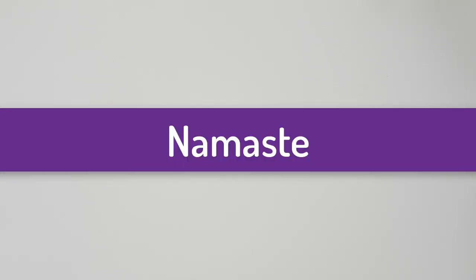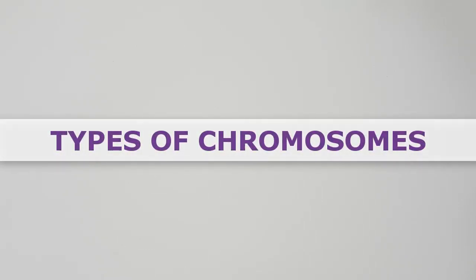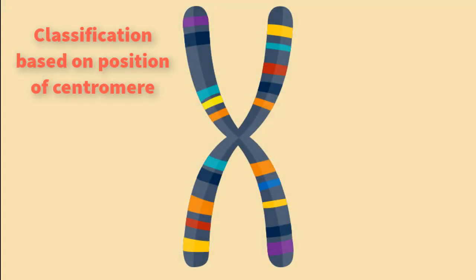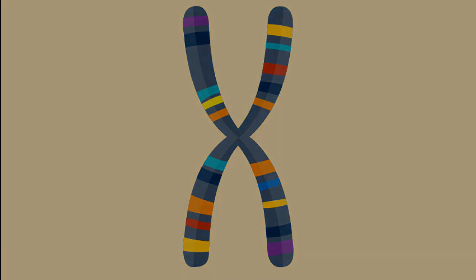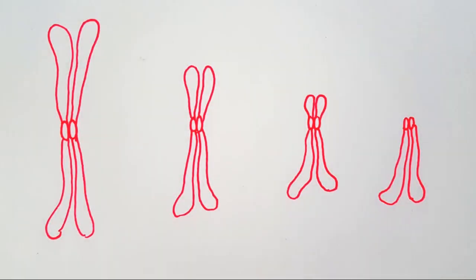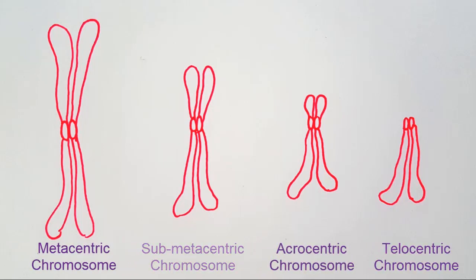Namaste. Today we will try to understand the types of chromosomes. The classification of these chromosomes is based on the position of the centromere and the length of its arms. These chromosomes are metacentric, submetacentric, acrocentric, and telocentric.